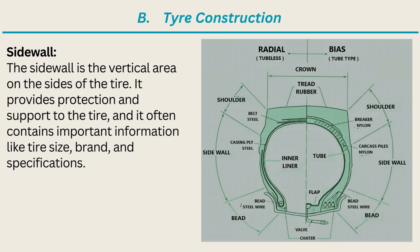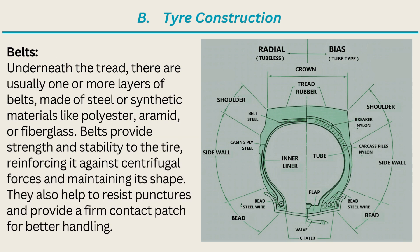Sidewall: the sidewall is the vertical area on the sides of the tire. It provides protection and support to the tire, and often contains important information like tire size, brand, and specifications. Belts: underneath the tread, there are usually one or more layers of belts made of steel or synthetic materials like polyester, aramid, or fiberglass. Belts provide strength and stability to the tire, reinforcing it against centrifugal forces and maintaining its shape. They also help to resist punctures and provide a firm contact patch for better handling.